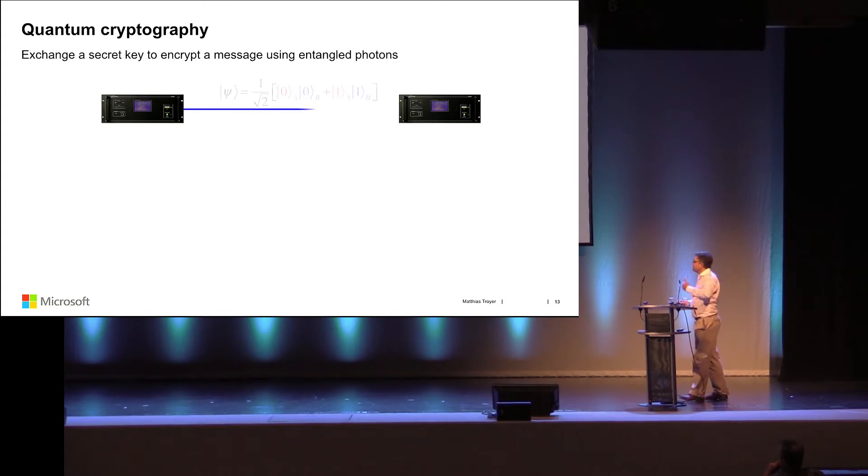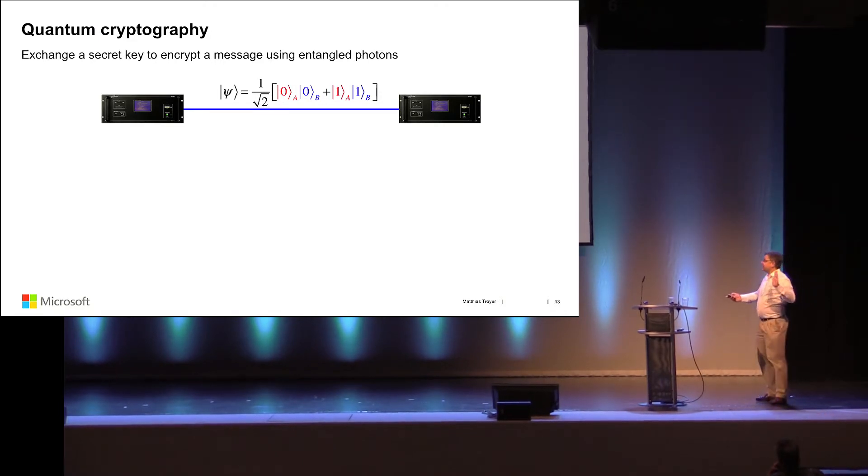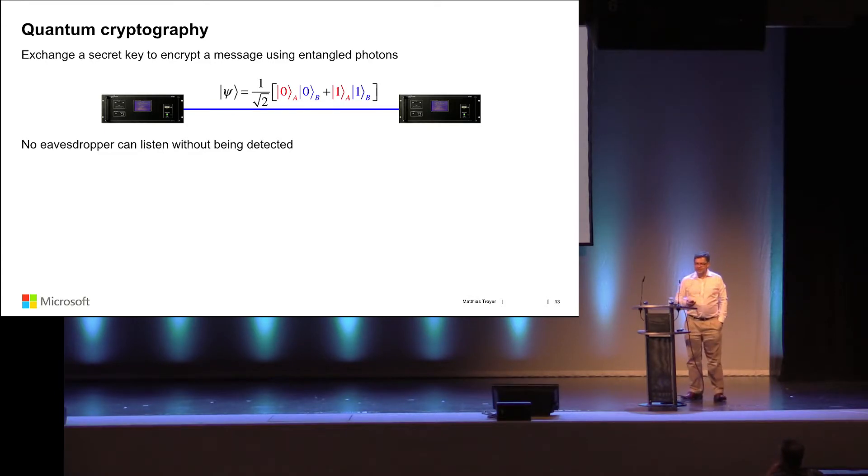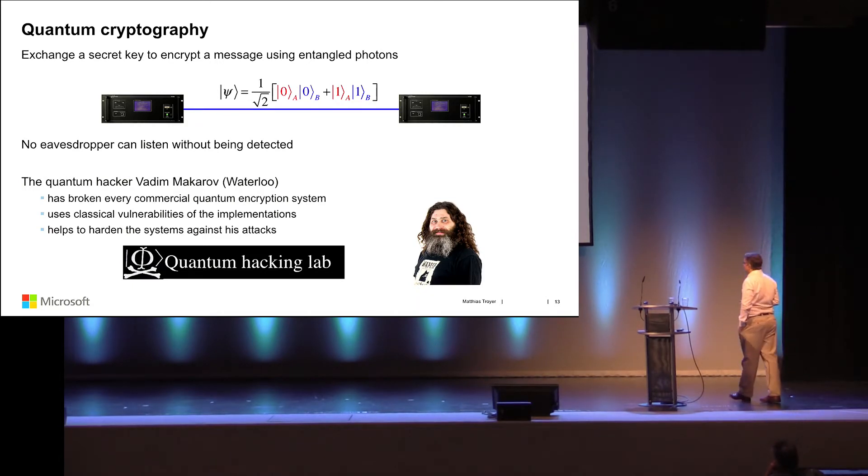We have this secret. We use it. We have a random sequence of bits when we send out 20, 30, hundred such qubits that we share. This is also a device that you can buy in Switzerland and in Japan and elsewhere. No eavesdropper can listen without being detected. Except there's the quantum hacker Vadim Makarov in Waterloo. He specializes in hacking quantum encryption systems. He has so far managed to break every commercial quantum encryption system on the market. He uses classical side information, classical loopholes. Then he helps people fix the flaws to make it secure. What the Chinese do to make it more secure, they place repeaters in satellites because it's very hard to eavesdrop on satellites.